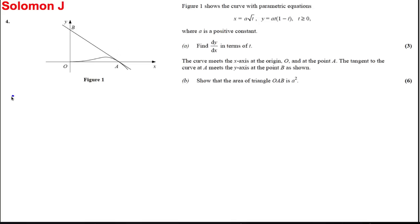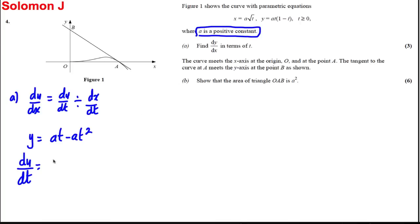For part (a) we're using dy/dx equals dy/dt divided by dx/dt. Let's work out each of these separately. y equals at(1 - t), so I'm going to expand that as at - at². dy/dt, forgetting about a which is just a constant, is going to be equal to a - 2at.